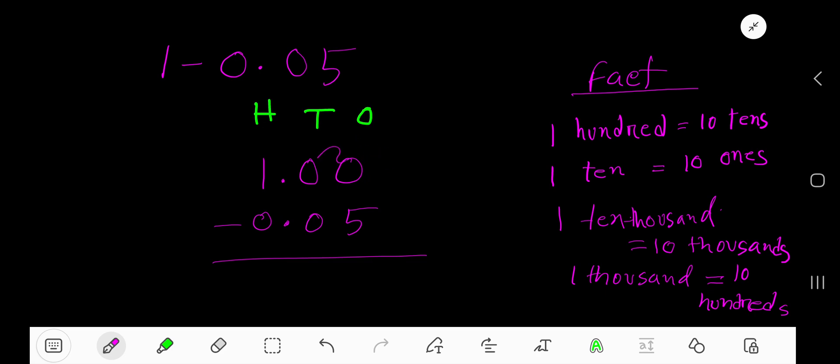If you borrow 100, then you will have zero hundreds, and 100 equals ten tens since this is the tens column. Now if you borrow one ten, you will have nine tens, and one ten equals ten ones.